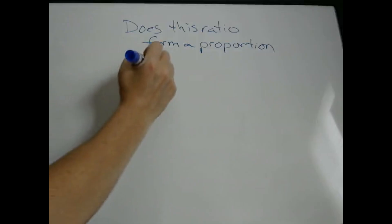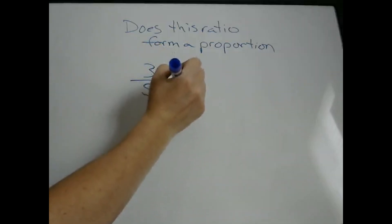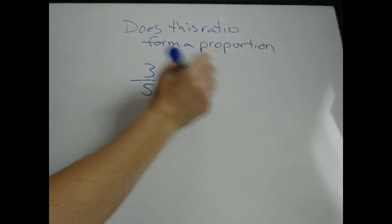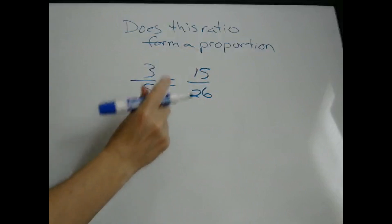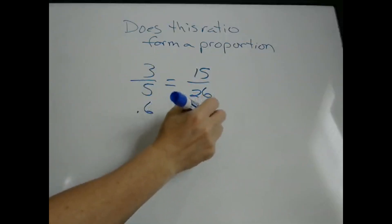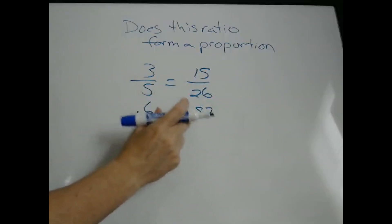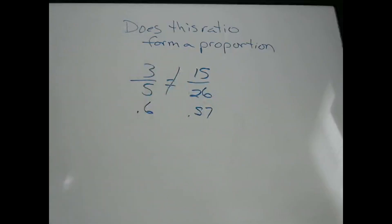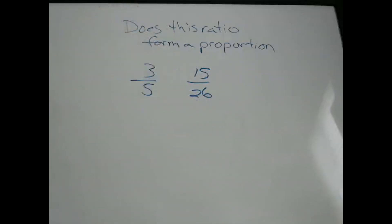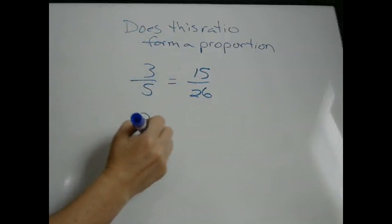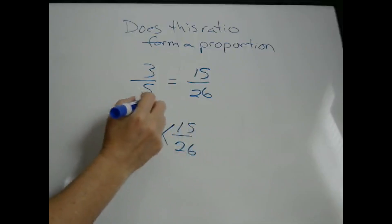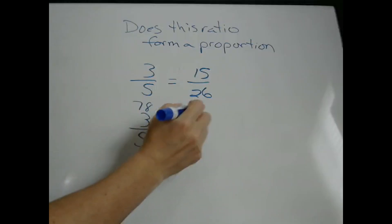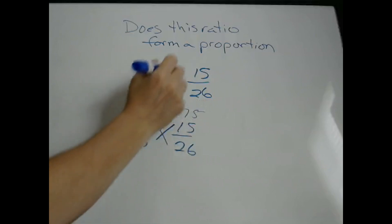Now let's say they gave us instead 3 fifths and 15 twenty-sixths. Here, 3 divided by 5 is 0.6, and 15 divided by 26 gives 0.57. These are not equal, so the answer is no — they do not form a proportion. The other way to figure this out is by cross-multiplying: 3 times 26 is 78, and 15 times 5 is 75. These two numbers are not the same, so no, it does not form a proportion.